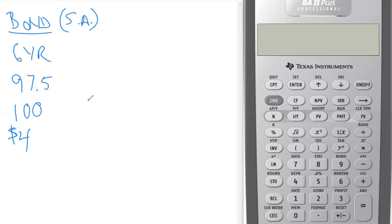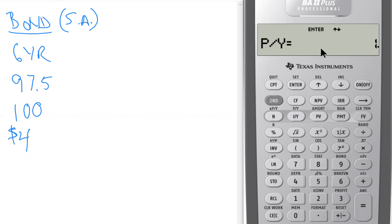If we use our financial calculator to calculate the yield to maturity, let's go ahead and plug in these values. First, make sure the calculator is set up with payments per year set to one — that's great, because now we'll make our own adjustments for the bond. For a six-year bond paying semi-annually, we multiply by two to get 12 payments, and that's what we'll enter for N.